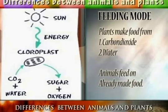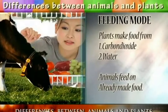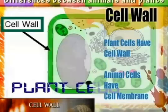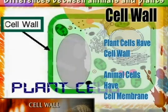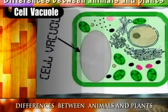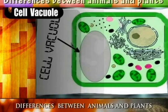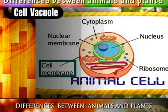Plants have a cell wall and animals lack a cell wall. There is a vacuole in the plant cell and it is lacking in the animal cells.